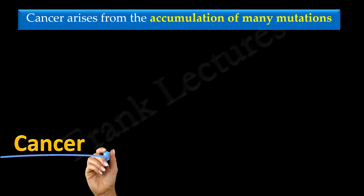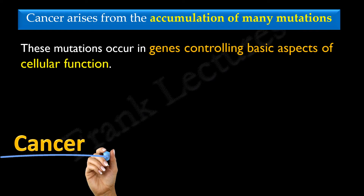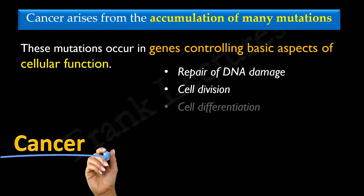Another important point is that cancers rarely arise from a single mutation in a single gene. In fact, cancer arises from the accumulation of many mutations. These mutations take place in the genes controlling basic aspects of cellular function — for example, in the genes involved in the repair of DNA damage, cell division, cell differentiation, and apoptosis.